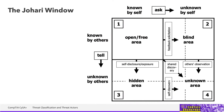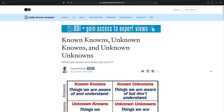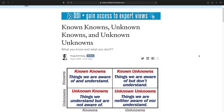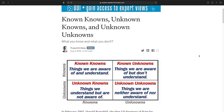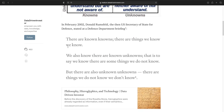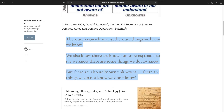For the exam, you should be aware of this classification based on knowledge, also called the Johari window, which basically covers the four combinations between things that are known or unknown by us or by the rest of the world. This Johari window is sometimes connected to a well-known — pun intended — speech from US Secretary of Defense Donald Rumsfeld.